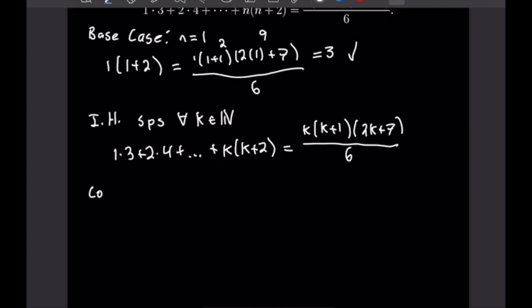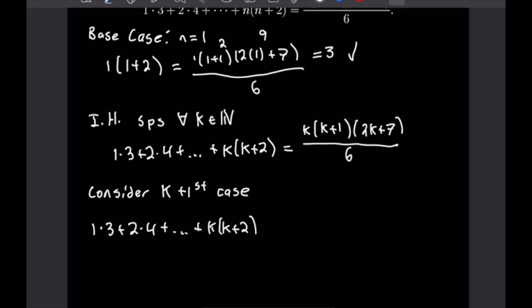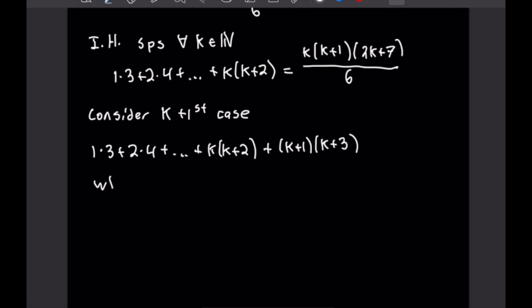We're going to consider the k plus first case. That will be 1 times 3 plus 2 times 4 plus all the way up to k times k plus 2, but then we'll have one more term from our next case: k plus 1 times k plus 3. We want to show that this is equal to k plus 1 times k plus 2 times 2k plus 9 all over 6.